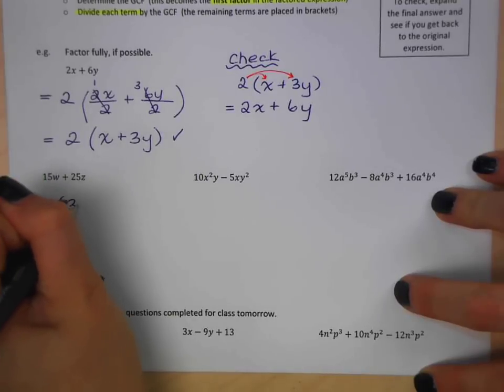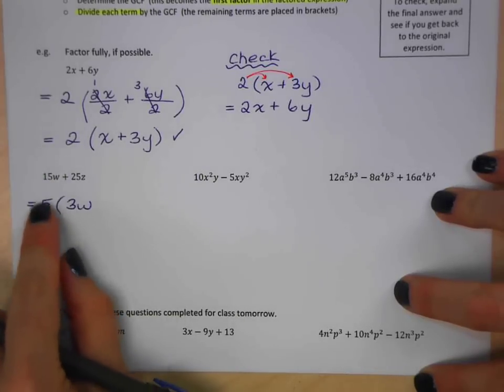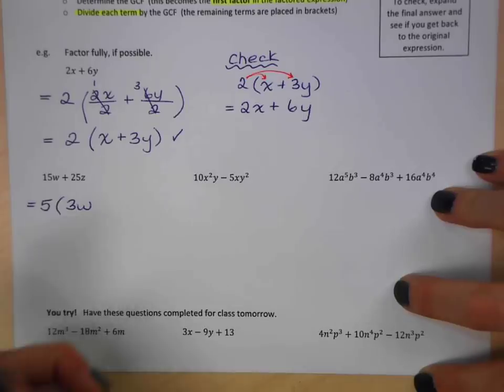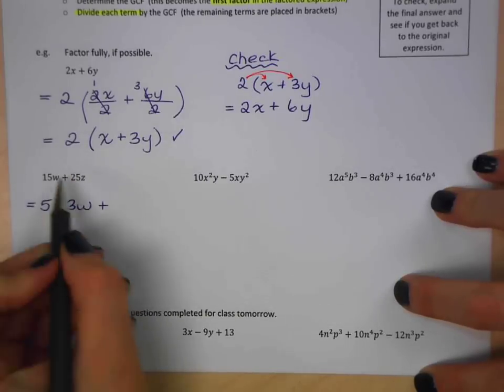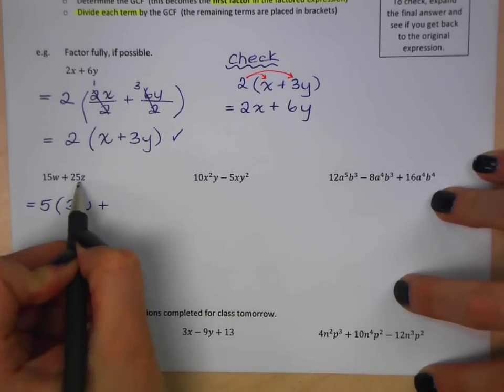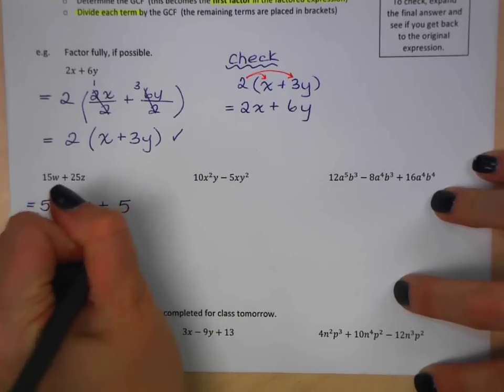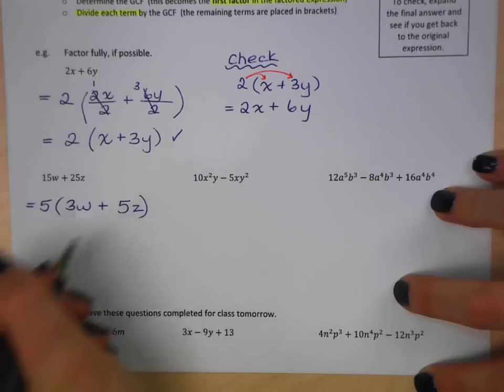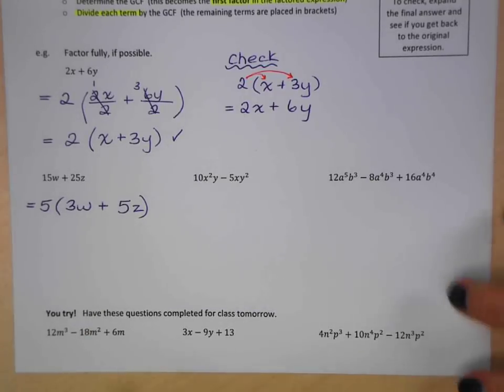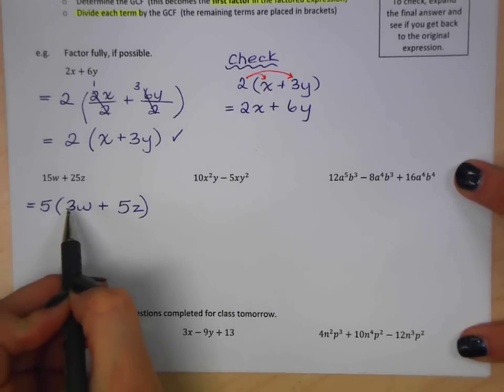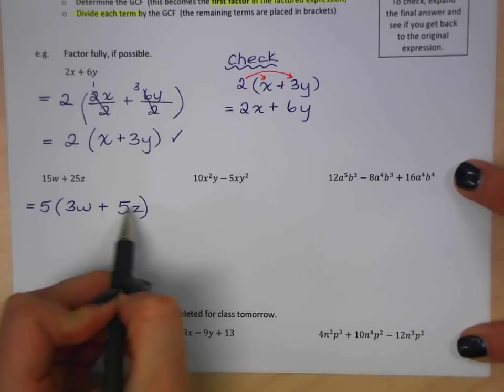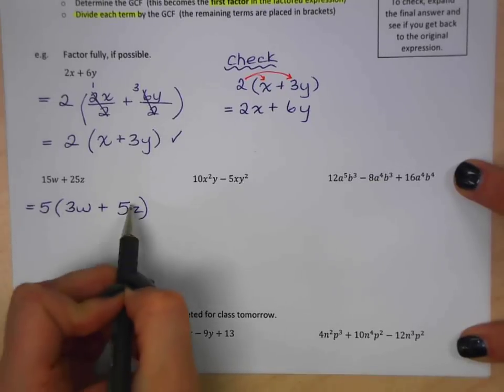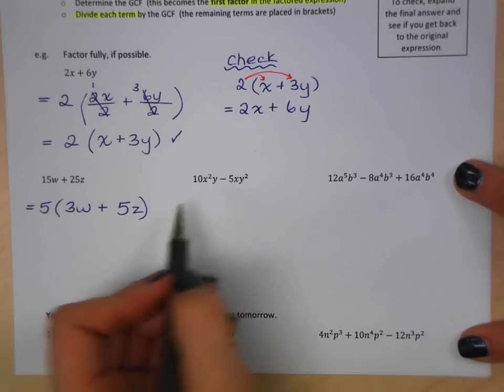And then there's another way to think about it. I can either think about division like this, or think about what do I need to multiply here. So I need to multiply these two things together to get this. So 5 times what gives me 15w? Well, 3w times 5 gives me 15w. And again, 5 times what gives me 25z? Well, 5 times 5 gives me 25, and I need to have a z there. So I'm done.